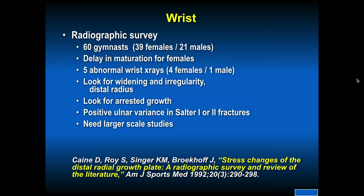In a radiographic survey of 60 gymnasts, there was a delay in maturation for females, and five had abnormal wrist x-rays — four females and one male. Look for widening and irregularity of the distal radius in the highly competitive gymnast. Look for arrested growth and positive ulnar variants in Salter 1 or 2 fractures. Larger-scale studies are needed, but be aware that a highly competitive gymnast with wrist pain could indeed have a radial growth plate fracture distally.